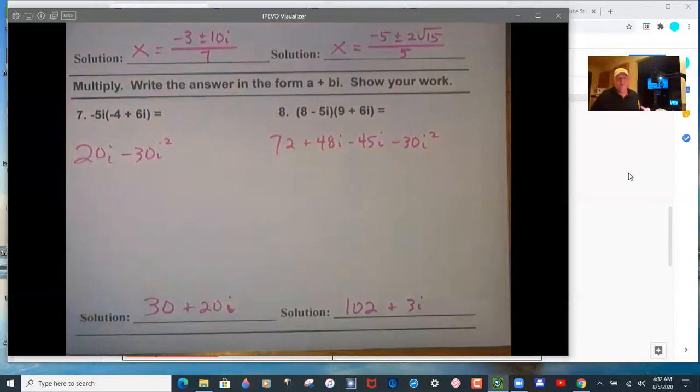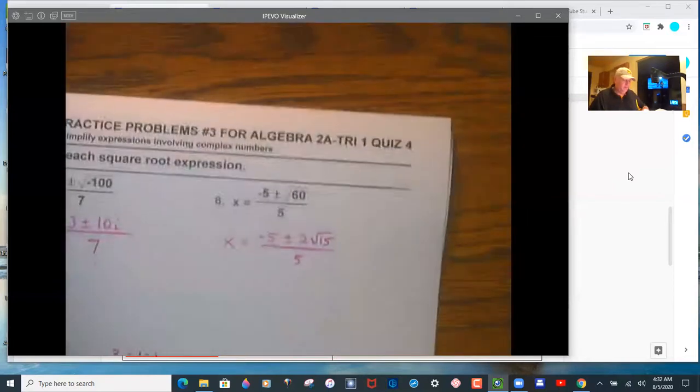And then 72 plus 30 is 102, plus 3i. So remember, just change the sign. And when you have that i squared, it's a negative 1, so it's a sign changer. And then you're just adding those values together.